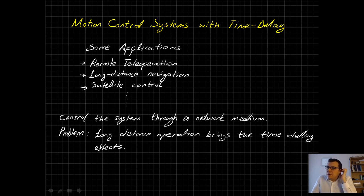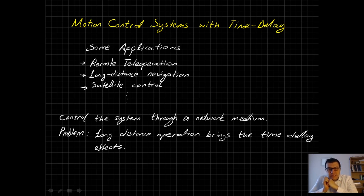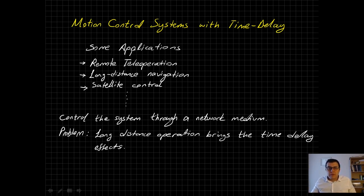Consider a scenario where you're trying to control a robot that is 500 kilometers away. If you think about the time delay due to the speed of light, it will require a couple of milliseconds for your control signals to reach the remote location. Even if there is no additional network latency, there is still time delay due to the limited speed of light between the two nodes. This makes it a good starting point to compare two architectures.